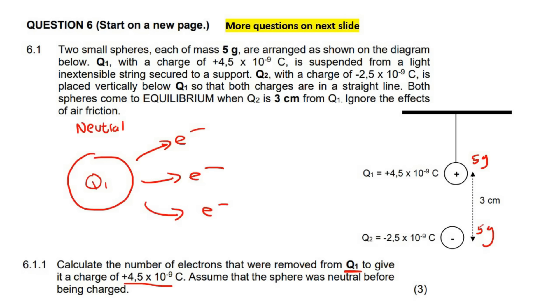Electrons are negative. So when something gives away electrons, then what does it become? More positive. And that is why Q1 is positive. That's why Q1 is positive when it gave away electrons. Now they're saying calculate how many electrons were given away. So we have a special formula for this.